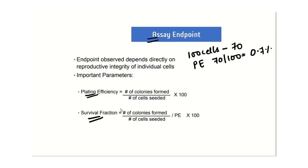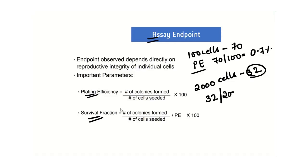To calculate survival fraction, for example, if you seeded 2000 cells and obtained 32 colonies, you divide the number of colonies by the number of cells seeded multiplied by the plating efficiency percentage. This gives a survival fraction of 2.3%.